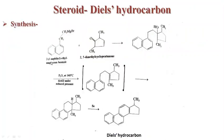Here is the synthesis. The starting compounds are 2-(1-naphthyl)ethyl magnesium bromide and 2,5-dimethylcyclopentenone. Addition takes place, resulting in this compound, which on heating with P₂O₅ at 120°C under reduced pressure loses a water molecule, forming a double bond. Cyclization of the ring then takes place, followed by double bond rearrangement, and finally selenium dehydrogenation converts it into Diels hydrocarbon.